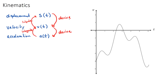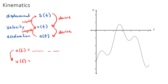We can differentiate using our standard rules. When we integrate, we'll have a constant of integration, plus c. We'll often be given some information to find c. For example, if given a(t) and asked to find v(t), we integrate, and they might also give us a known velocity at a specific time so we can solve for c. These questions require practice, but it's essentially just differentiating and integrating different types of functions.